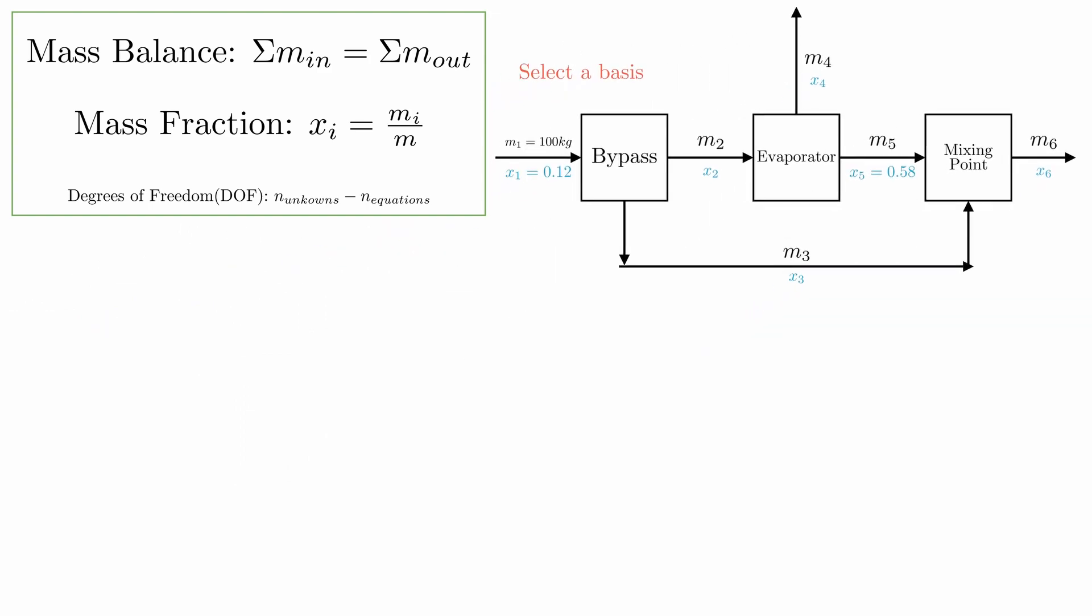So we drew our entire process flow diagram, which we can use to write our mass balance and solve for our equations. The first thing I like to do is the overall mass balance. Draw an invisible box around the entire system, and think about what's going in and out of the entire system. We have the inflow M1, the evaporation product M4, and the product M6.